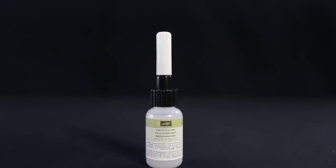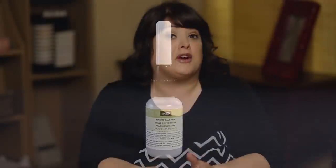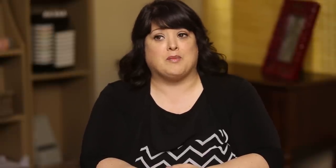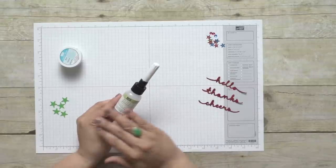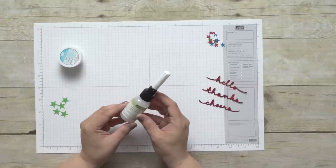It's the perfect adhesive for detailed gluing where you adhere small embellishments, glitter, or small paper cutouts. We don't recommend that you use it on heavy embellishments like buttons, but you can use it on nice small embellishments to add to your projects.